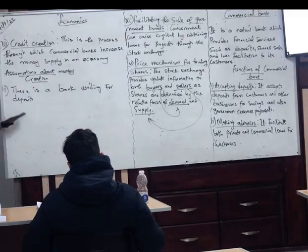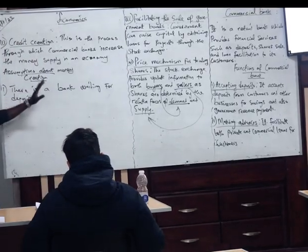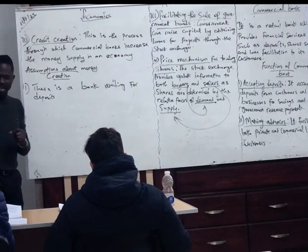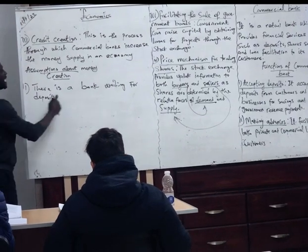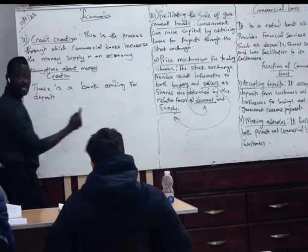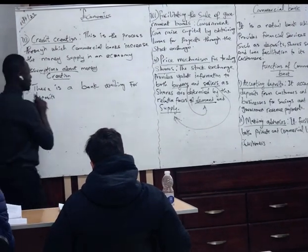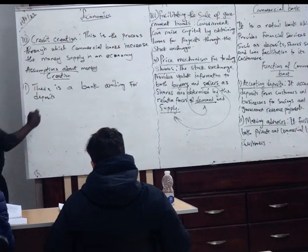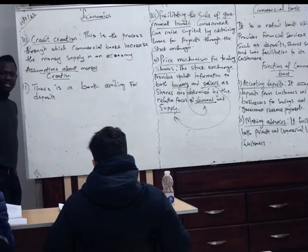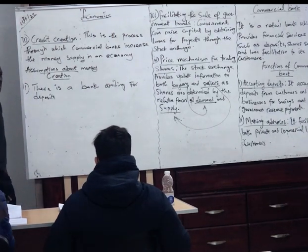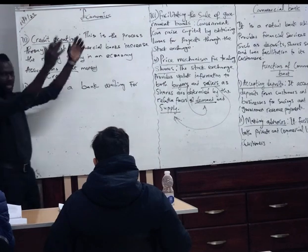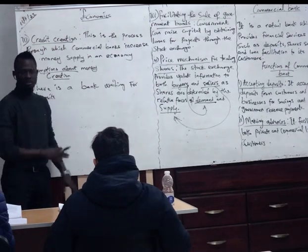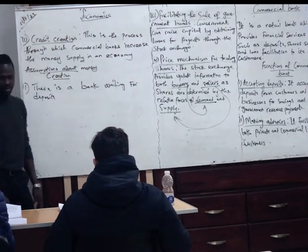There is an assumption about money creation. The first assumption about money creation is that there is a commercial bank waiting for deposits. There is a commercial bank waiting for deposits — that means this bank is available, it is waiting for people to come put money into the bank.